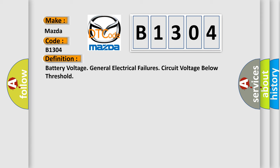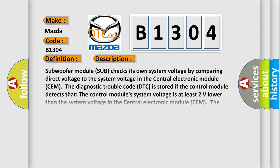The basic definition is: Battery voltage general electrical failures, circuit voltage below threshold. The subwoofer module checks its own system voltage by comparing direct voltage to the system voltage in the central electronic module (SEM). The DTC is stored if the control module detects that its system voltage is at least two volts lower than the system voltage in the central electronic module. The control module's test for the DTC starts in the event of an activated control module.